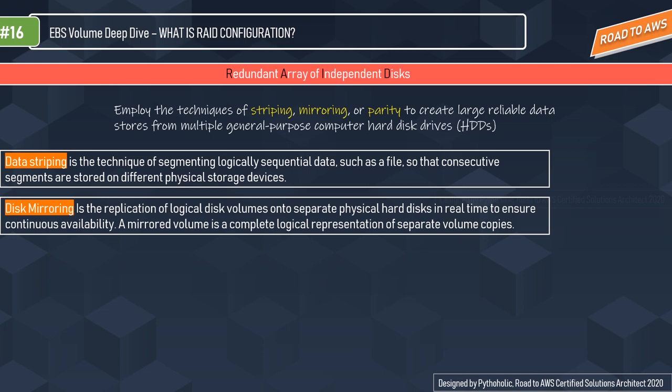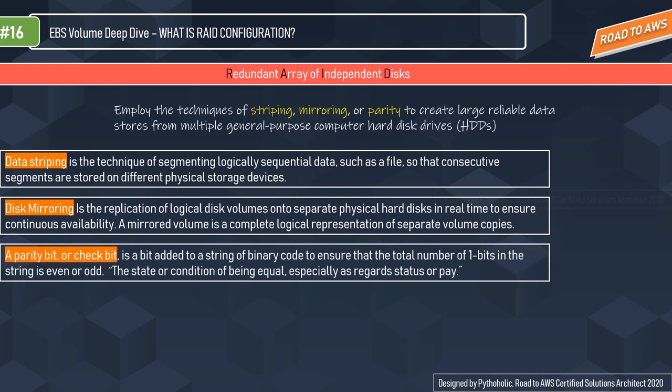The third concept is the parity bit or check bit. A parity bit is added to a string of binary code to ensure that the total number of one-bits in the string is even or odd. Parity in English means equality, uniformness, consistency, or sameness. In networking terms, parity bits are used often for error detection.